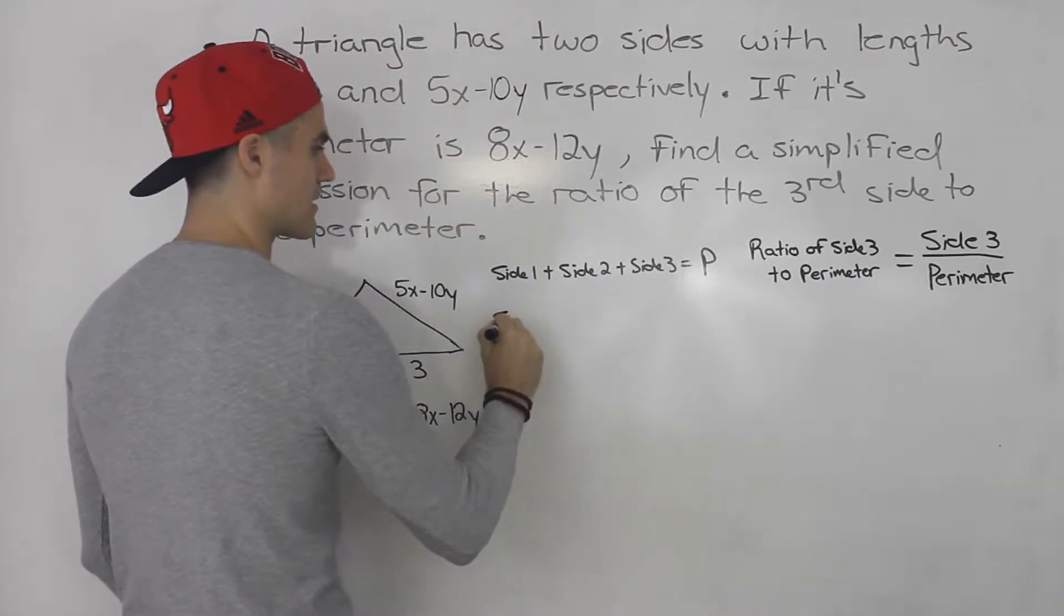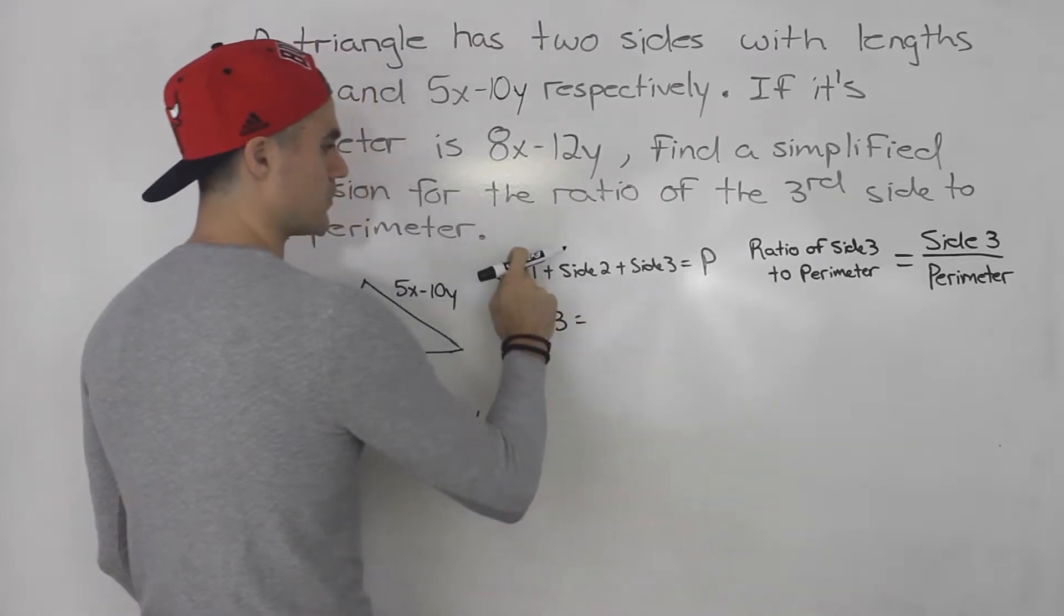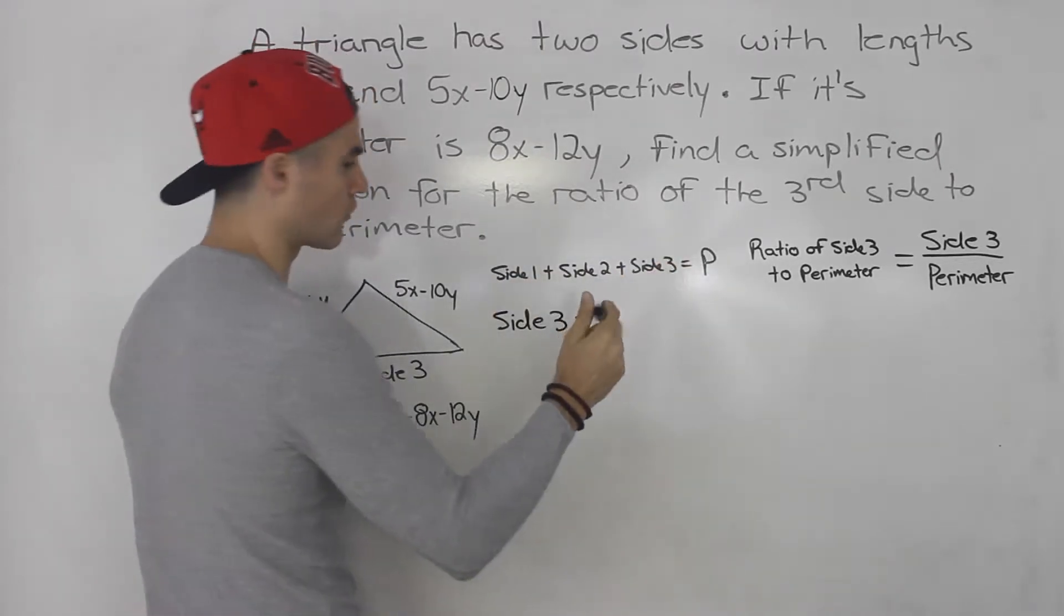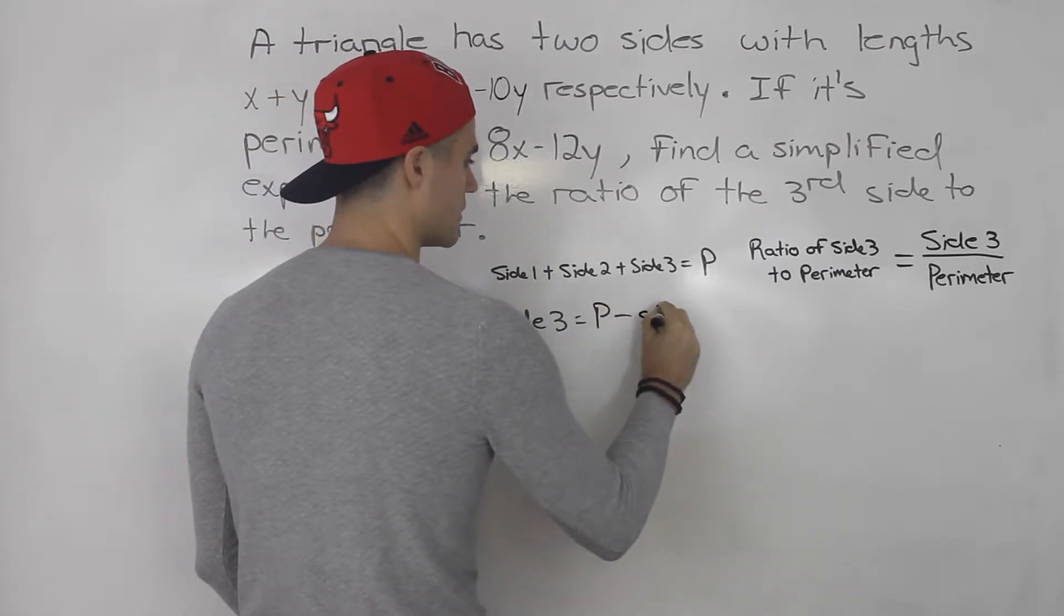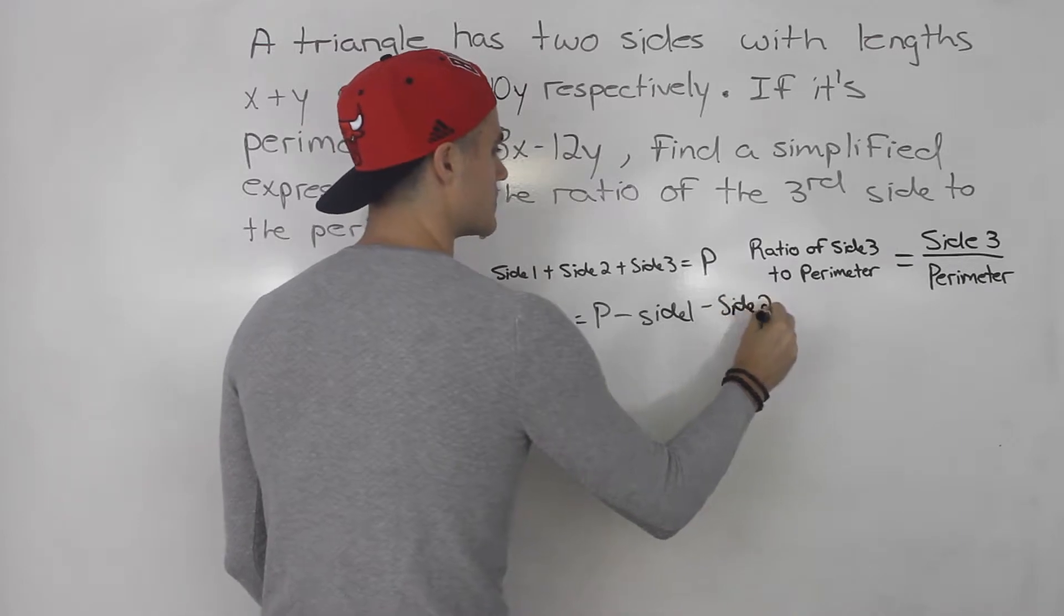So if we want to isolate for side 3, basically we could bring side 1 and side 2 over. So it would be the perimeter minus side 1 minus side 2.